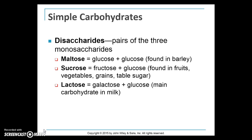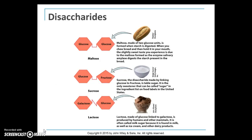The other type of simple carbohydrates are disaccharides. The most common disaccharides in our diet are maltose, sucrose, and lactose. Maltose is made of two glucose units and is found in barley. Sucrose is fructose and glucose, found in fruits, vegetables, grains, and table sugar. Lactose — made of galactose and glucose — is the main carbohydrate in milk.